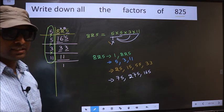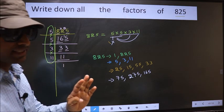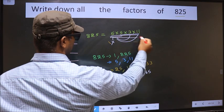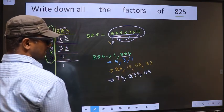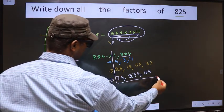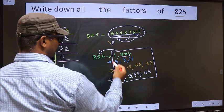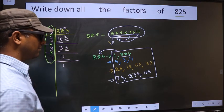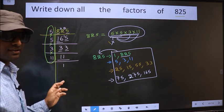Next. Now you take the combination of four numbers. How do we do that? See. Here we have four numbers. When we take all the four numbers, we get 825 itself. Therefore, all these numbers are the factors of 825. All these numbers are the factors of 825. Am I clear?